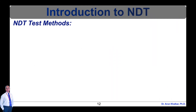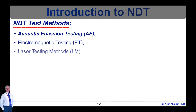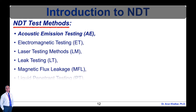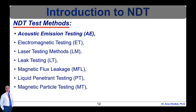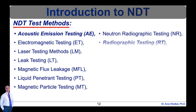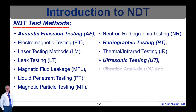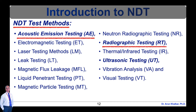Now let's see the list of few NDT tests. Test method names often refer to the type of penetrating medium or the equipment used to perform that test. Current NDT methods are acoustic emission testing, electromagnetic testing, laser testing methods, leak testing, magnetic flux leakage, liquid penetrant testing, magnetic particle testing, neutron radiographic testing, radiographic testing, thermal infrared testing, ultrasonic testing, vibration analysis, and visual testing. We will study in detail acoustic emission test, radiographic testing, and ultrasonic testing as per our SPPU FE Engineering Physics 2019 pattern syllabus.